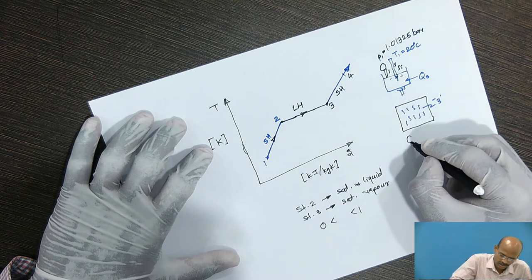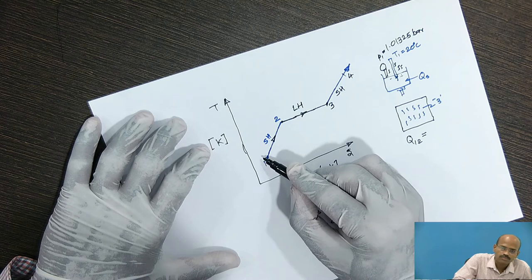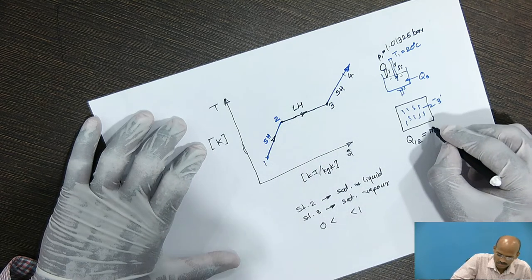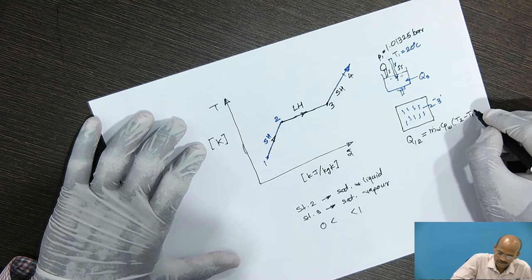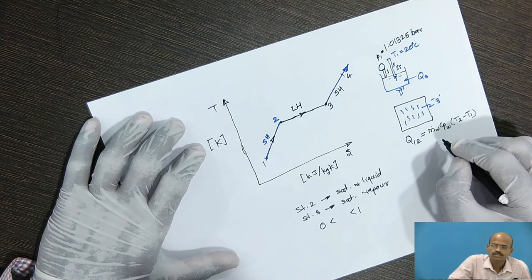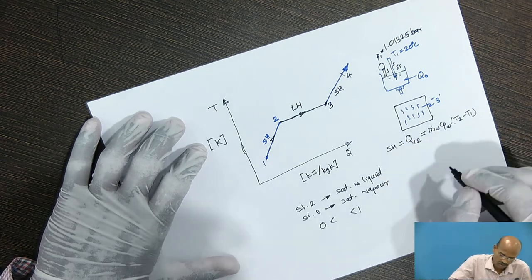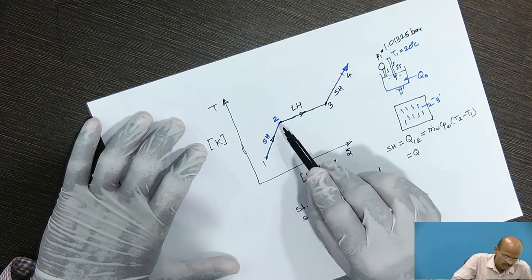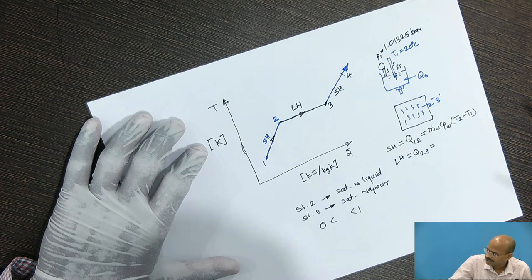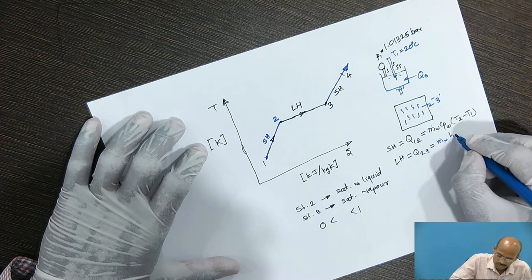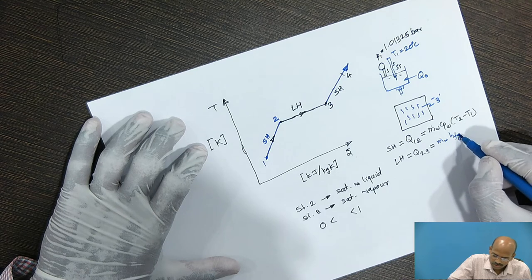Now the formula is very simple. For sensible heat, it is MCP delta T. So you could calculate the heat required during process 1 to 2 for heating the water from state 1 to state 2 is mass of water into specific heat of the water in the bracket T2 minus T1. Keep in mind, it will make the study of thermodynamics very simple as this was the sensible heat process. Now heat required to convert the saturated liquid into saturated vapor is during process 2 to 3, which is nothing but latent heat process. And the formula is mass flow rate of water into HFG, where HFG is the latent heat to convert the fluid into the gas.